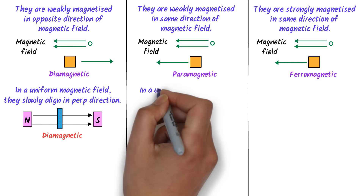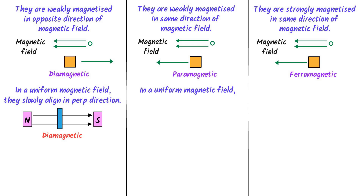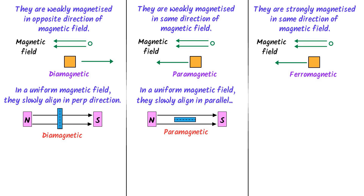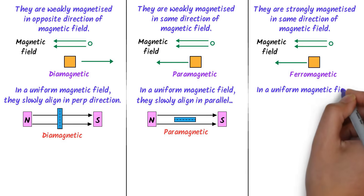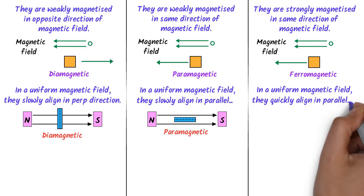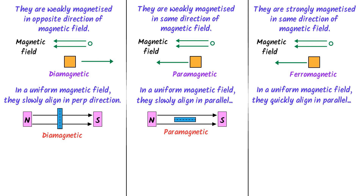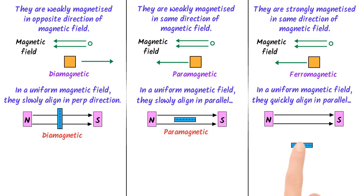When a paramagnetic rod is freely suspended in a uniform magnetic field, it slowly aligns itself parallel to the applied magnetic field. For example, if the magnetic field is in this direction, the paramagnetic rod will slowly align itself parallel to the applied magnetic field. When a ferromagnetic rod is freely suspended in a uniform magnetic field, it quickly aligns itself parallel to the applied magnetic field — for example, if the magnetic field is in this direction, the ferromagnetic rod will quickly align itself parallel.